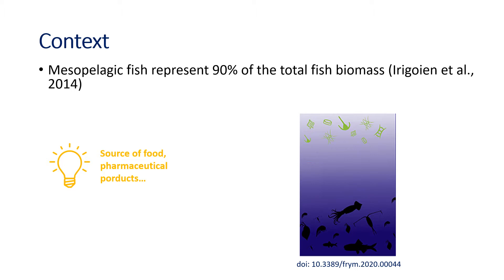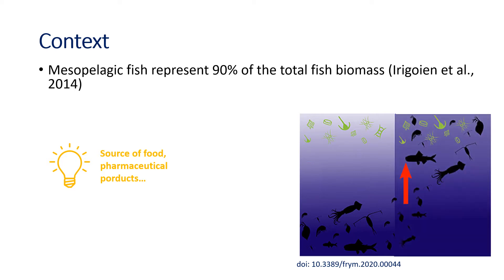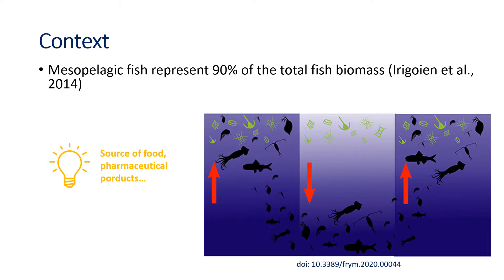These fish are characterized by a behavior called diel vertical migration. During the day, these animals stay in the mesopelagic ecosystem. At night, they migrate upward in the water column, reaching the epipelagic zone where they feed on prey. Later, with sunrise, they return to deeper layers where they release their pellets. Due to this migratory activity, mesopelagic fish take part in oceanic carbon cycles, sequestering carbon and nitrogen from the surface and enhancing their sinking.